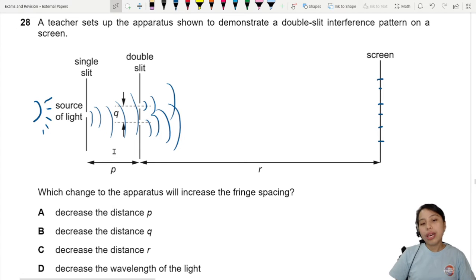So which change to the apparatus will increase the fringe spacing? When we say fringe spacing, we mean between this blue dot or line and the next blue line, that's the fringe spacing we call X.